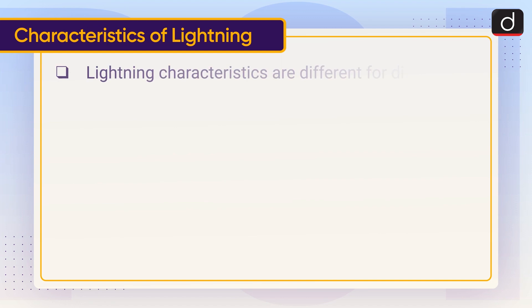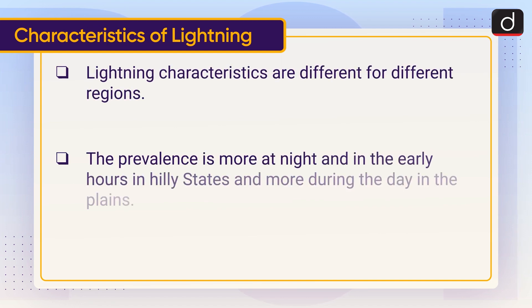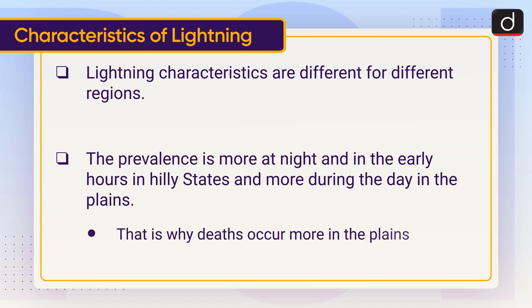Lightning characteristics are different for different regions. The prevalence is more at night and in the early hours in hilly states, and more during the day in the plains. That is why deaths occur more in the plains.